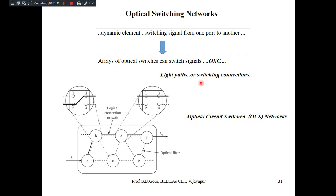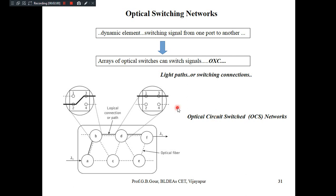In optical switching networks, there are three versions: optical circuit switched networks (OCS), packet switching based optical networks, and burst switching based optical networks. We will see each one by one.